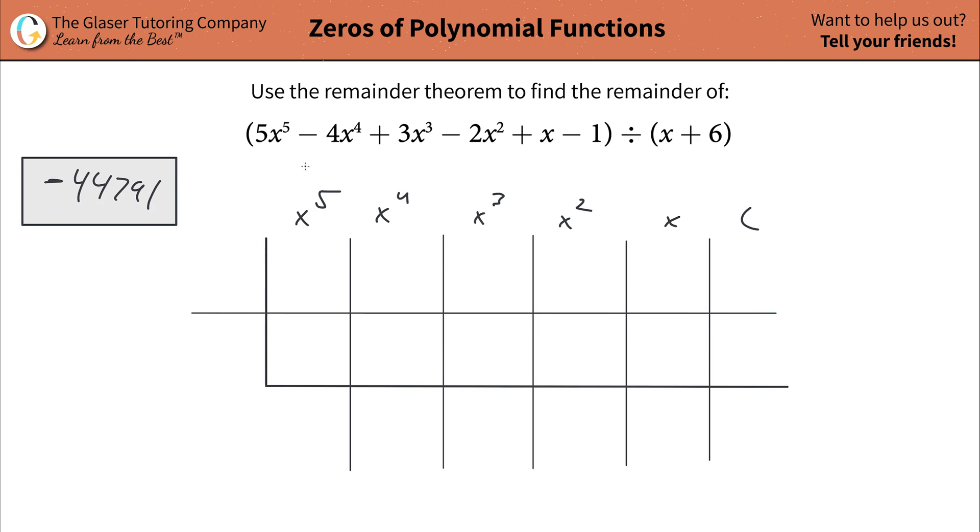That's x to the 1st, which is x, and then your constant. So the coefficient of the x to the 5th term is 5. The next one is negative 4. The next one is 3. The next one is negative 2. The next one is 1. The next one is negative 1.